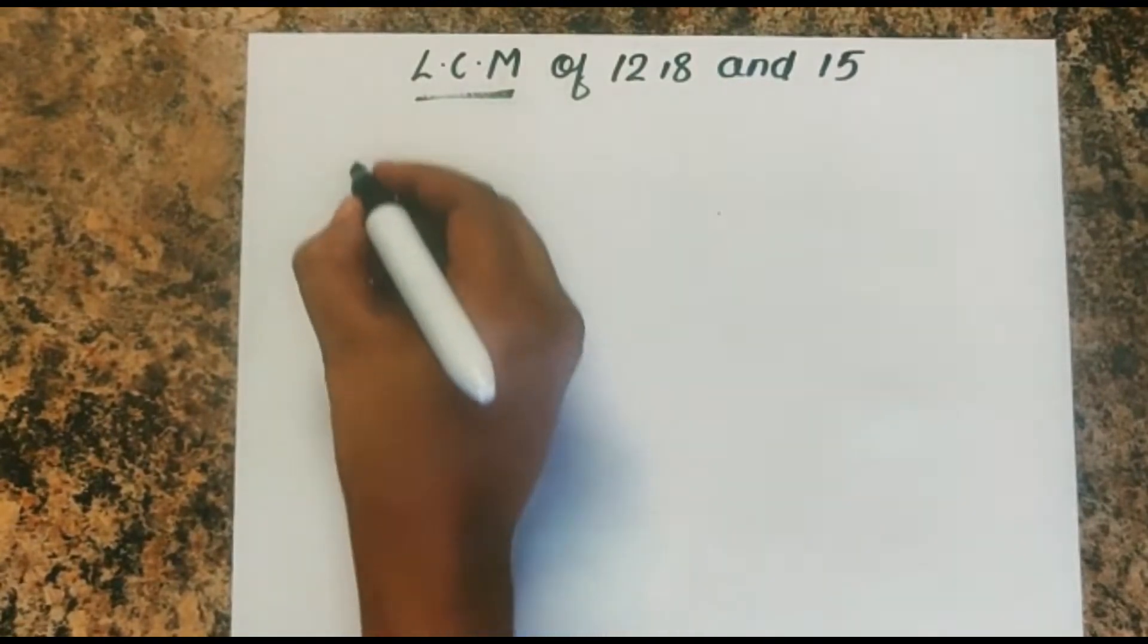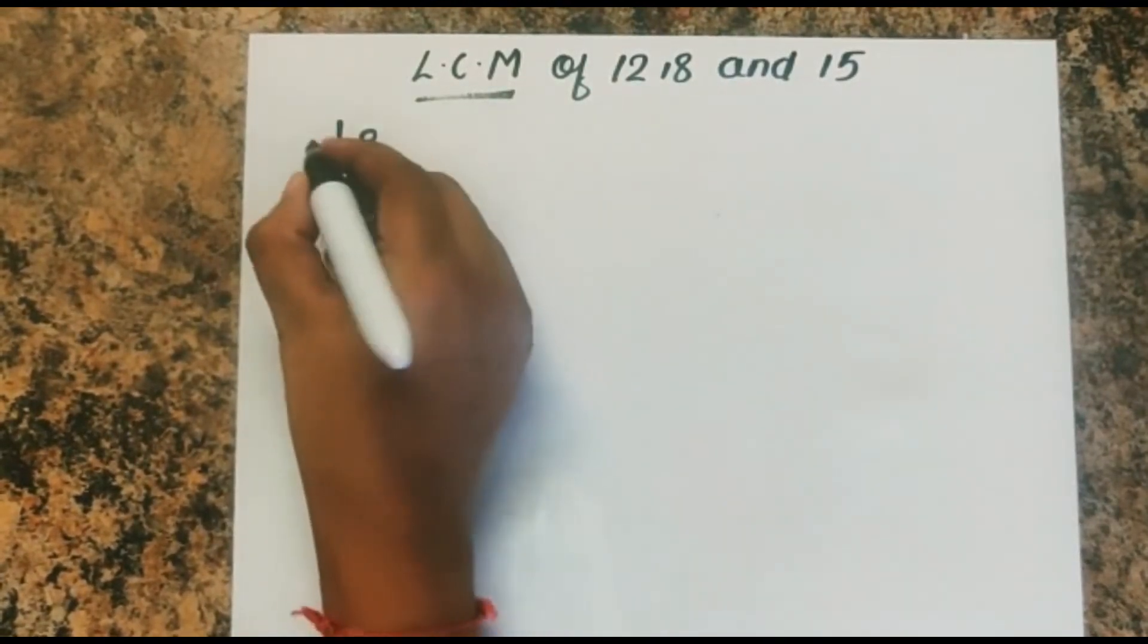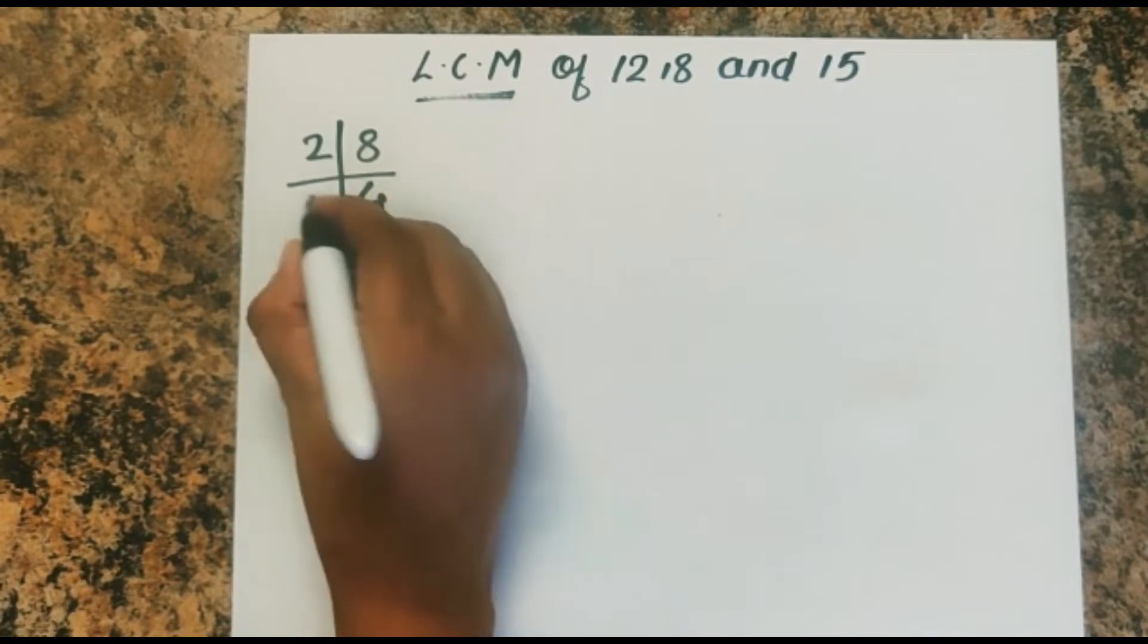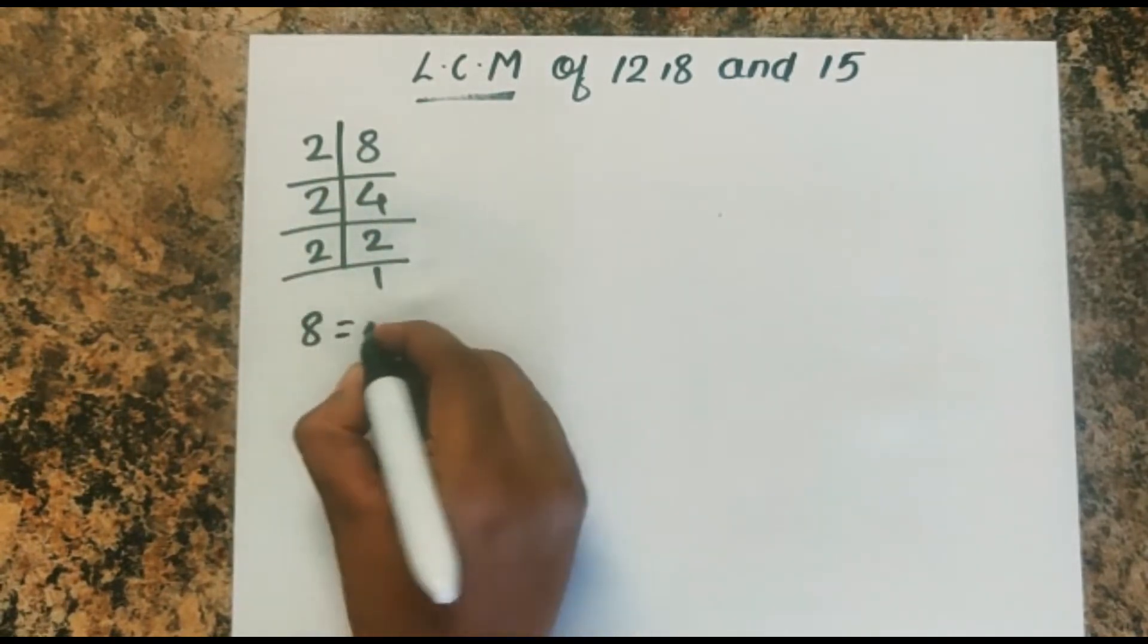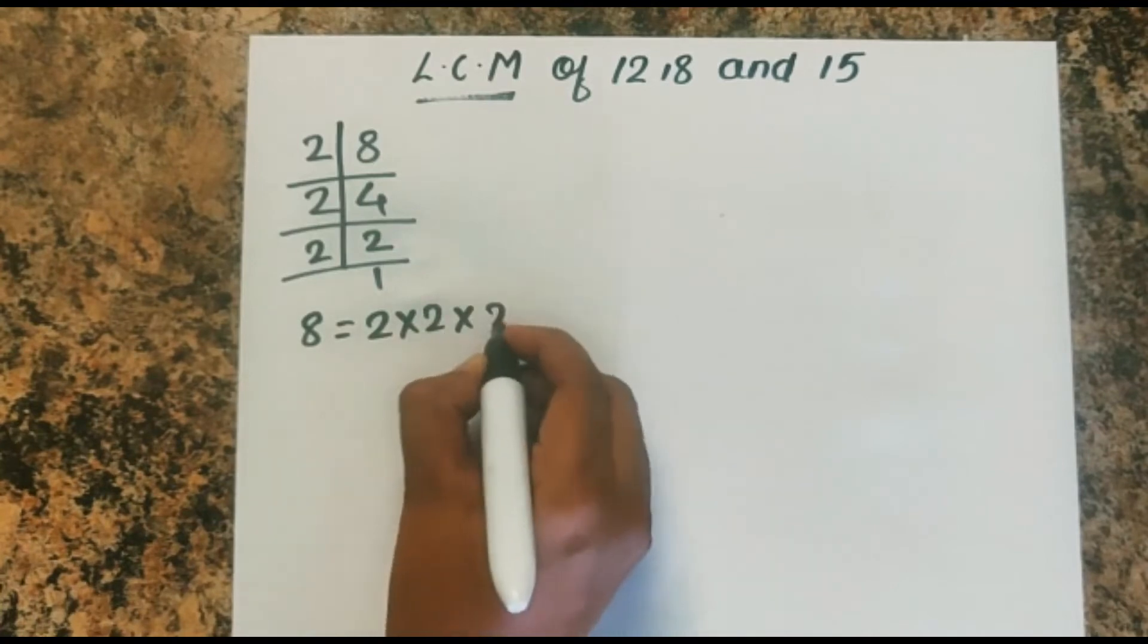We are going to find the factors similar to what we did in the previous video. So we have 8 equal to 2 into 2 into 2.